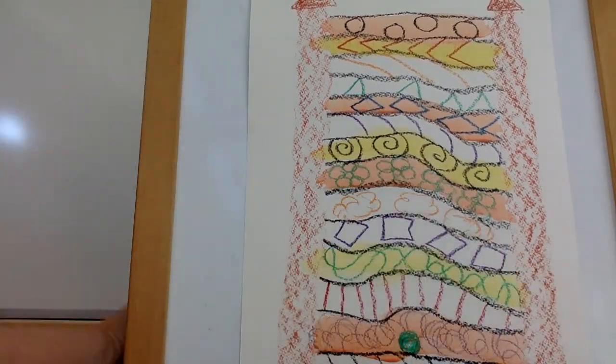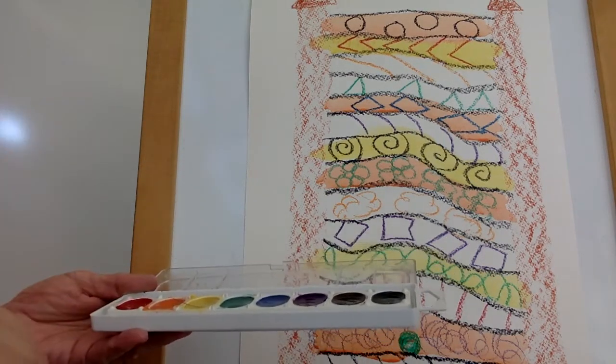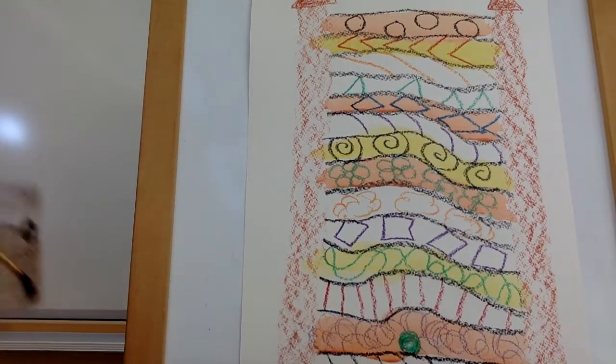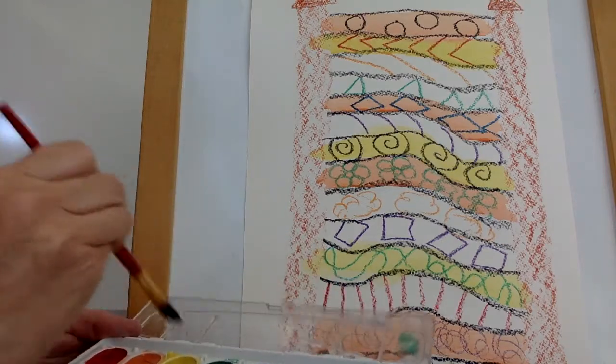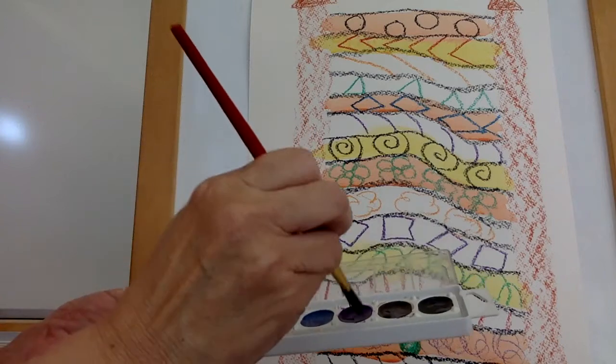And I'm going to rinse my brush off again. And for that, I just have a little plastic container of water. Once again, I'm going to tap off the extra. Put some here and then. Let's see what color I'll do next. Maybe purple.